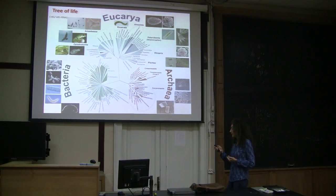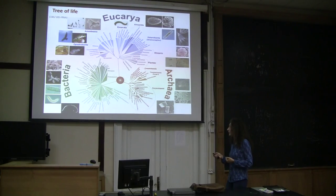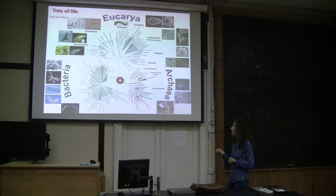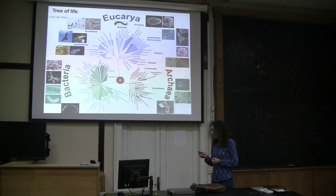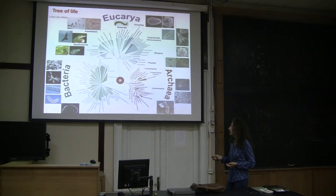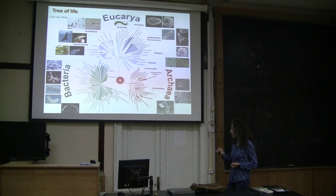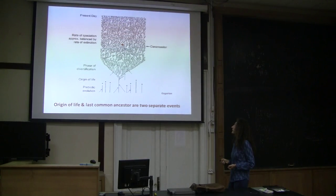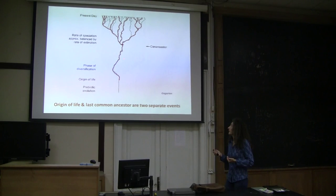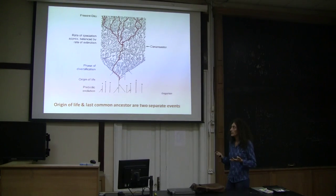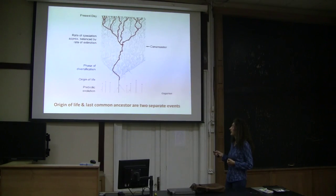So all these features suggest that the three domains of life derive from a single common ancestor that lived there, that long ago, and from which the three major lineages diverge. Now, this ancestor was likely not the first cell, and I will tell you more about this organism. This organism appeared to be something already quite complex, so that most likely it was accompanied by the divergence of other lineages that finally got extinct.